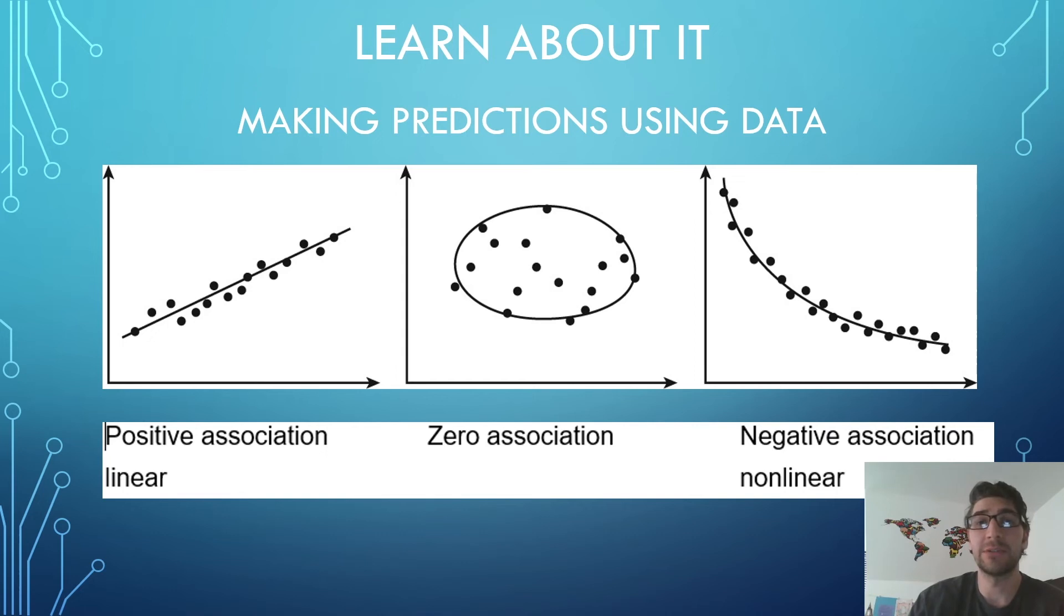Secondly, we will decide if the association is linear, meaning it can be modeled with a line, or alternatively, that the rate of change is almost constant. The association on the left is a linear association because we can draw a line that represents the general trend of the data. The association on the right is a non-linear association because a line would not be the best way to show the trend of the data. In other words, the rate of change does not appear to be nearly constant.